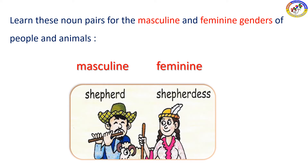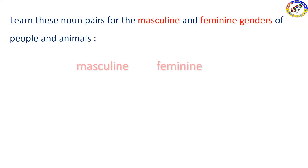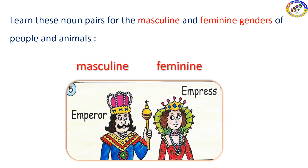Shepherd and shepherdess — shepherd is the masculine form and shepherdess is the feminine. Emperor and empress — emperor is also called raja and empress is rani.